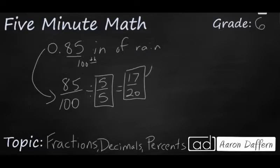So our answer 17 20ths is equal to 0.85. They just don't look anything alike but that's one way you can change from a decimal to a fraction. Let's look at another example.